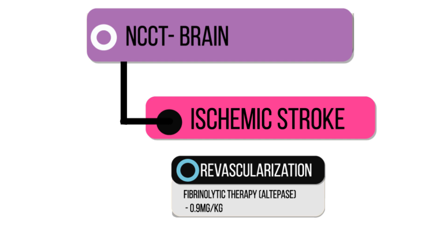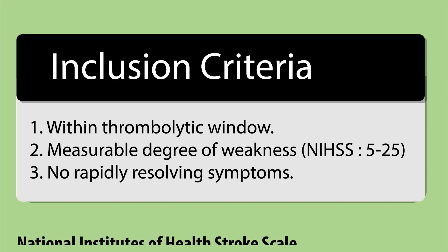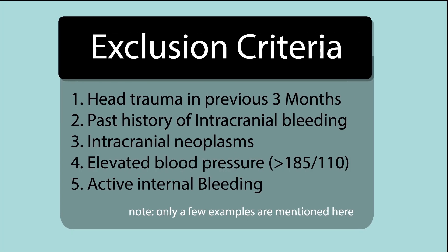Before you give alteplase, you have to check whether the patient fulfills the inclusion and exclusion criteria for thrombolysis. Inclusion criteria: the patient should be within the thrombolytic window of 4.5 hours from onset of symptoms; there should be a measurable degree of weakness — NIHSS scores between 5 and 25 are considered ideal for thrombolysis; and symptoms should not be rapidly resolving, as we do not thrombolyze patients with transient ischemic attacks. Please pause and go through the exclusion criteria for thrombolysis.